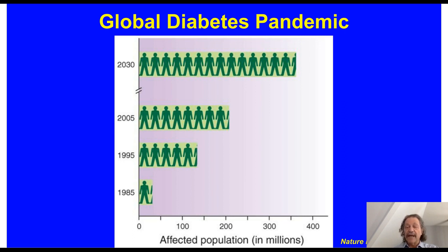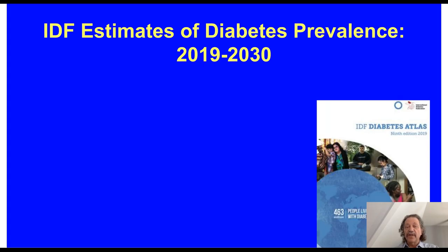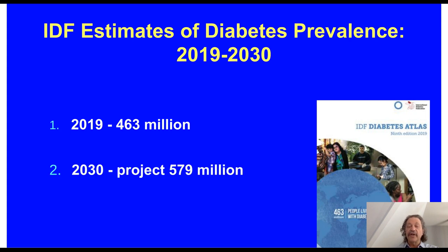What has happened in the 16 years since that publication? The latest data from 2019 from the IDF — International Diabetes Federation — estimates that in 2019, there were already 463 million people in the world with diabetes. By 2030, they project 579 million — well over half a billion people with diabetes.